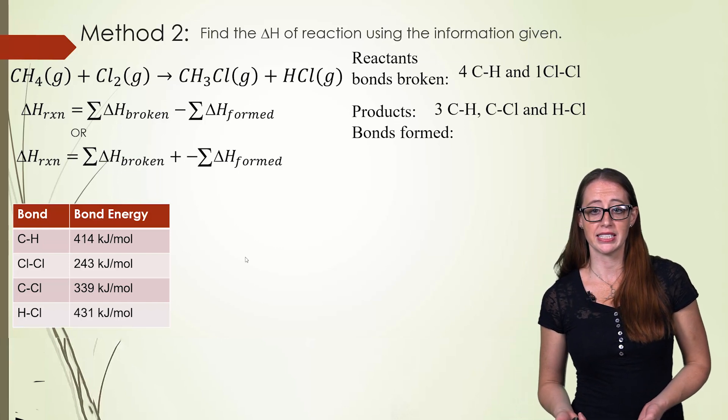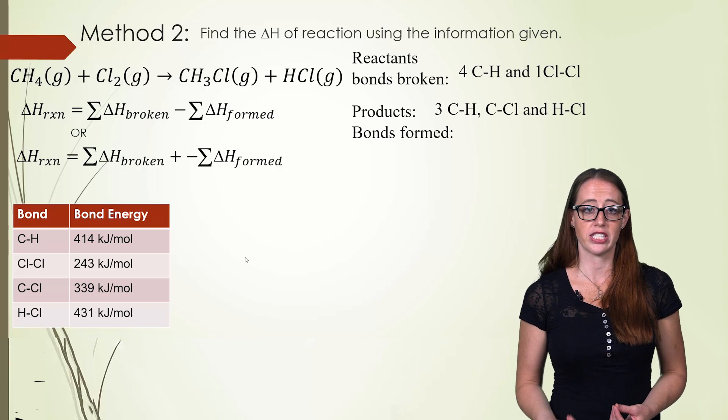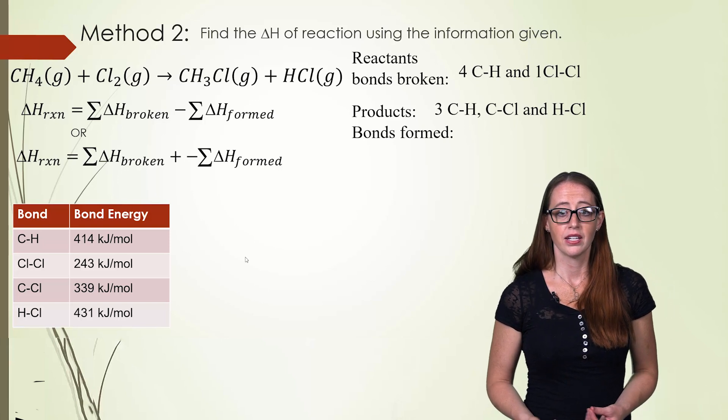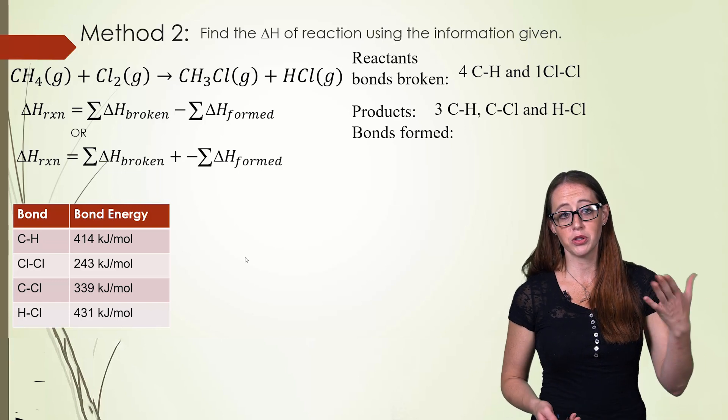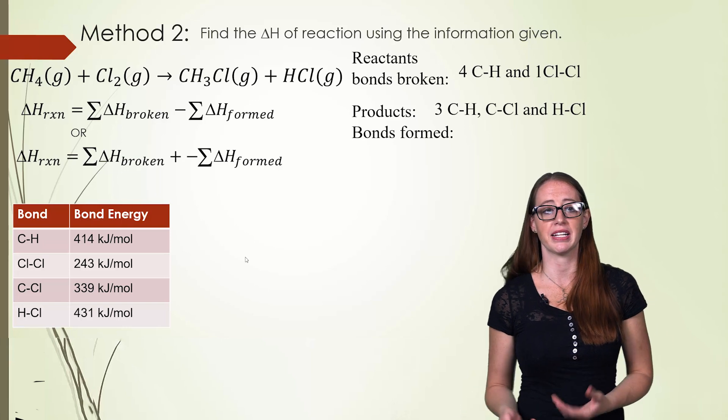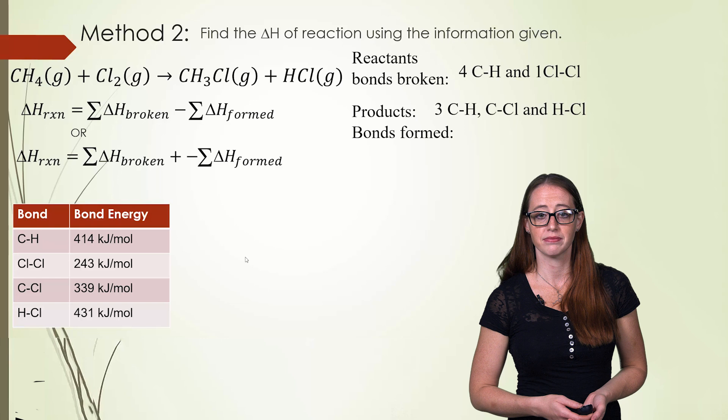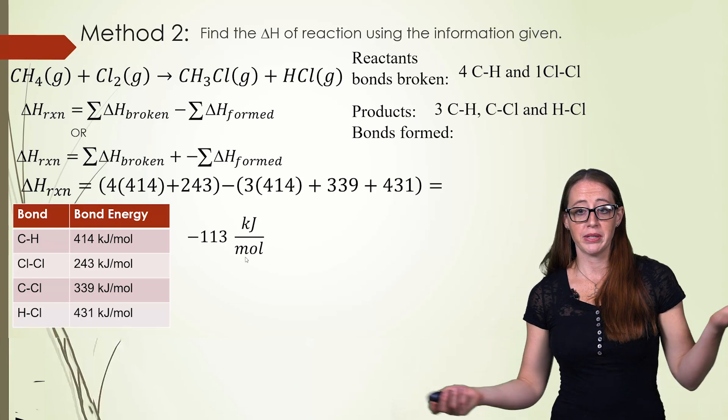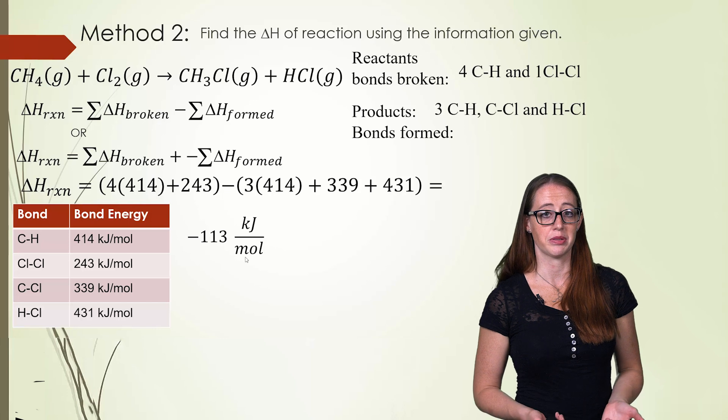Here we're going to add up all four of the bonds in CH4 and the one Cl-Cl bond. From here we can then subtract out the three C-H bonds, the C-Cl bond, and the H-Cl bond. You'll do this the exact same way that we did for the previous method and do bonds broken minus bonds formed. From here we end up with our same answer as before which is negative 113 kJ per mole.